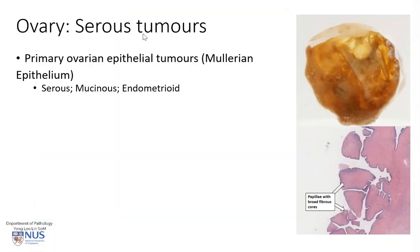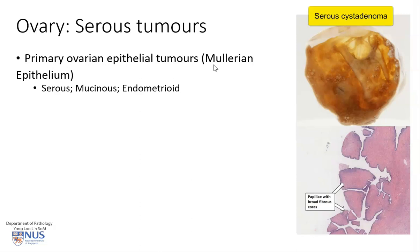Here I'm going to describe serous tumors in general, but this picture shows the gross and microscopic features of a serous cyst adenoma. Serous tumors of the ovary are primary ovarian epithelial tumors, and they derive from the Mullerian epithelium. There are three major histologic subtypes: serous, mucinous, and endometrioid. Here we'll be looking at the serous tumors.